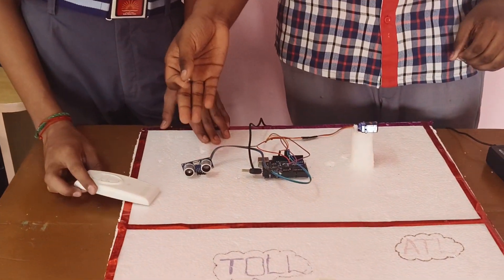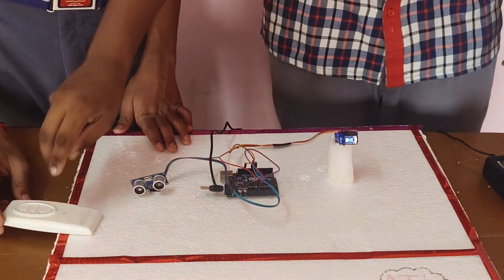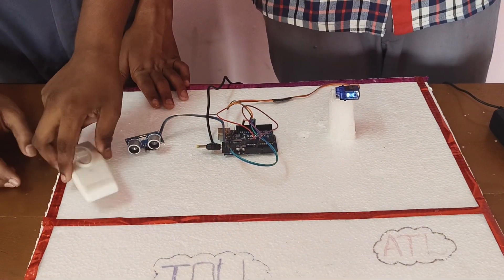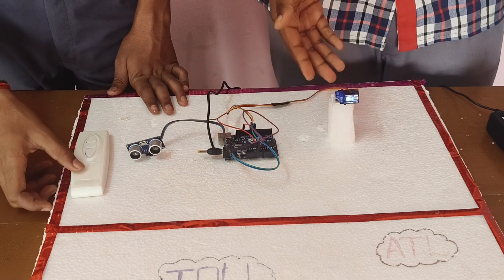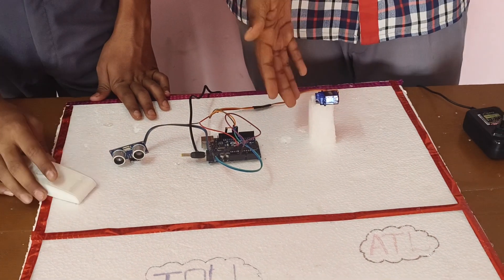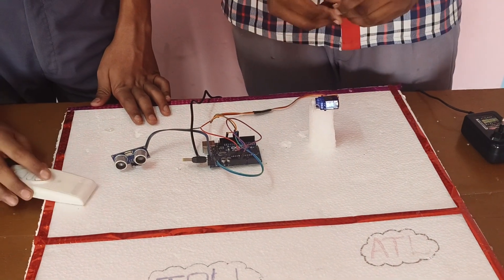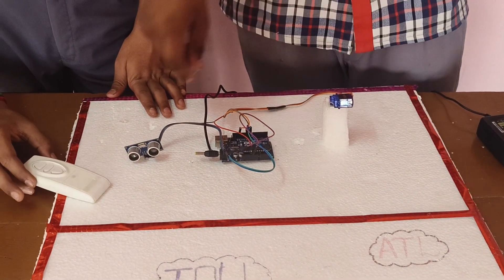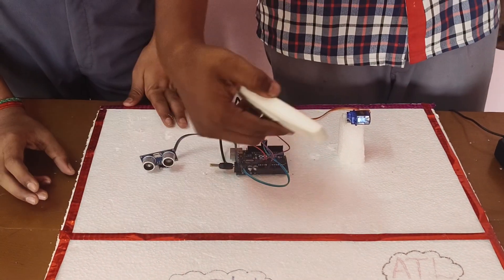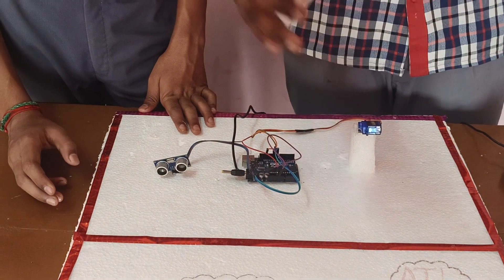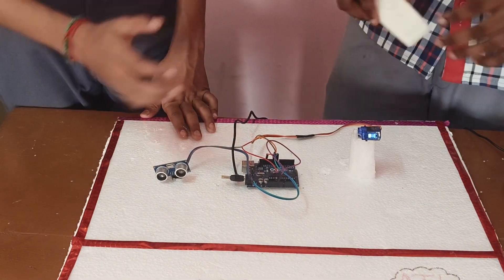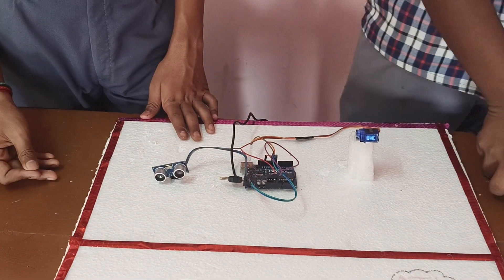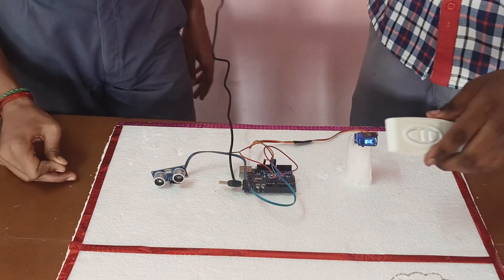And this is an ultrasonic sensor — it is sensing whether the vehicle is coming or not. And this is a servo motor which is acting as a gate in the toll gate. And this is a car which is acting as a car. So now let us see the working.